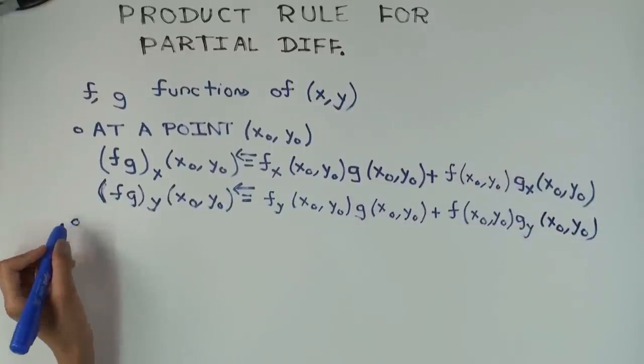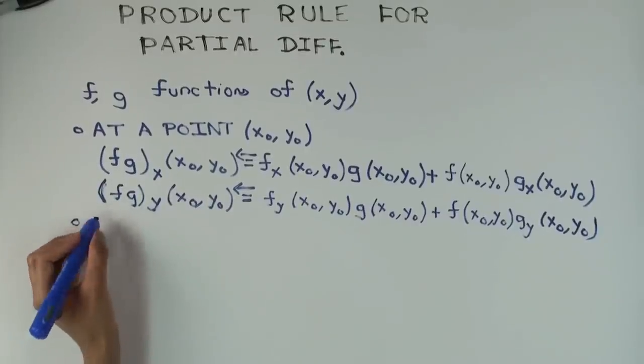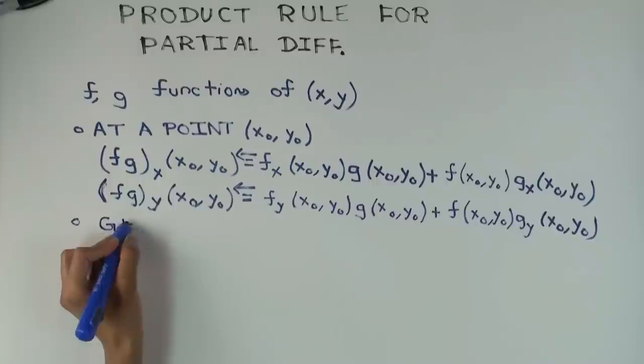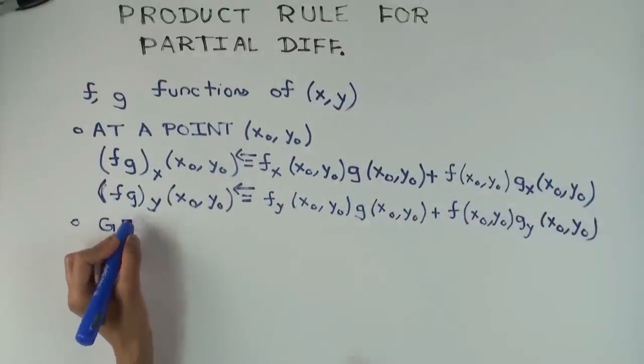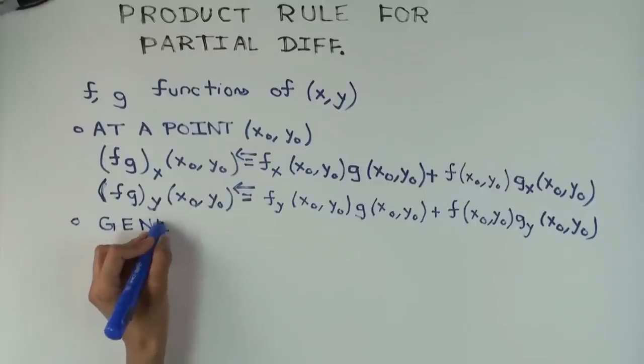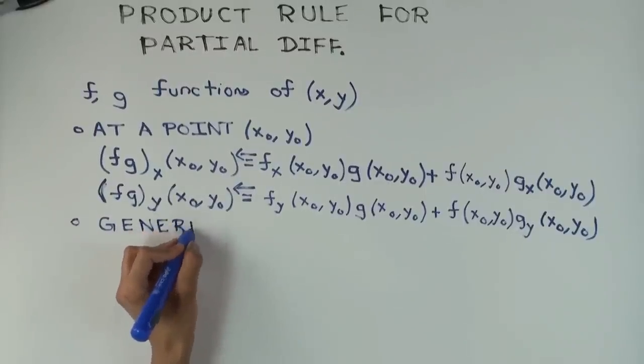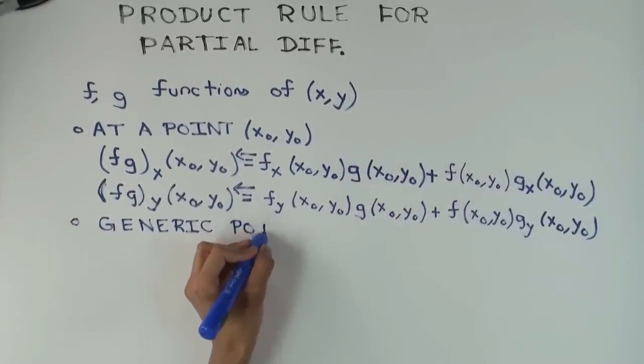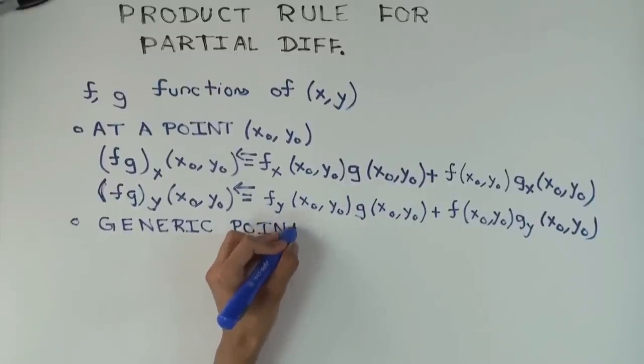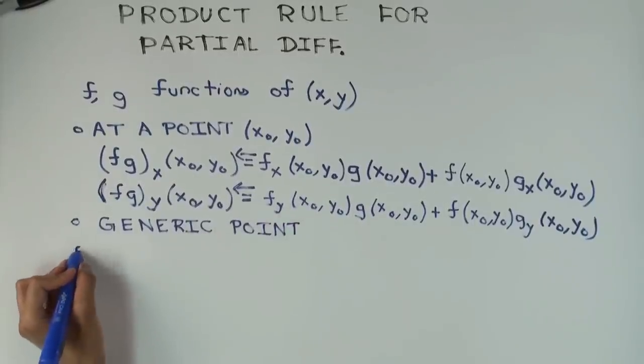Now the next version I'm going to talk about is a generic point. So the generic point, I'm going to write this down. It's basically going to be the same thing, except I'll just use x, y instead of x naught, y naught for everything, because I'm just doing the general version. I'm not even going to bother writing that down, but it's going to be the same thing as these two, except I'm just going to write x and y instead of x naught, y naught.